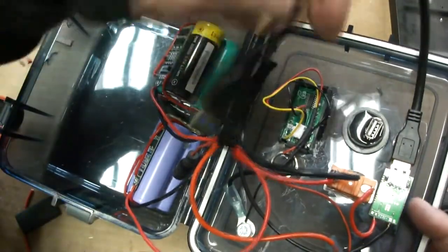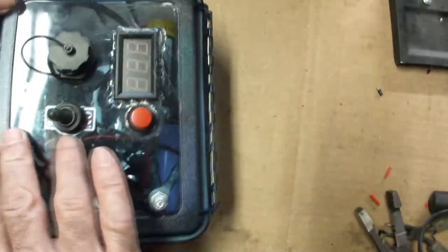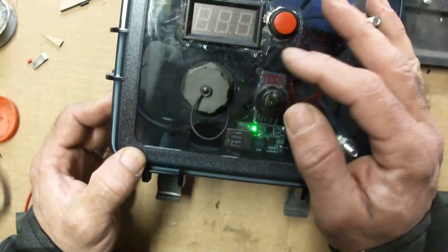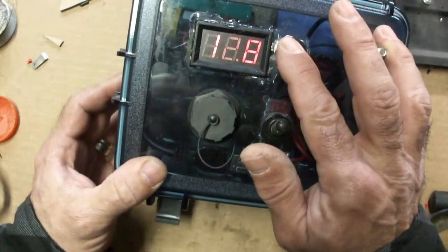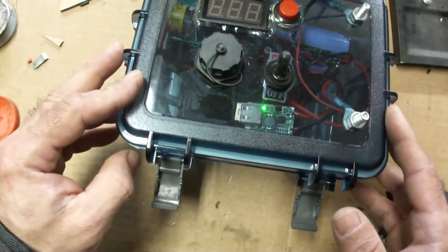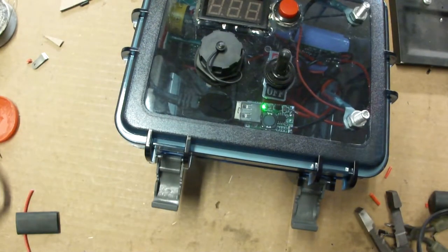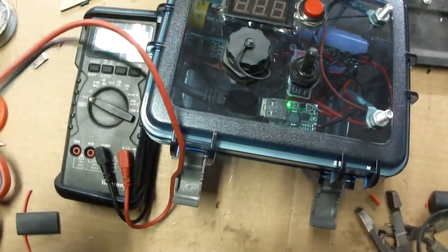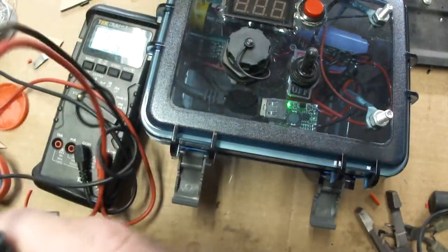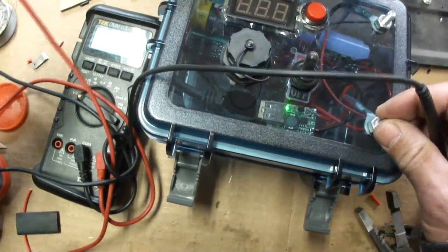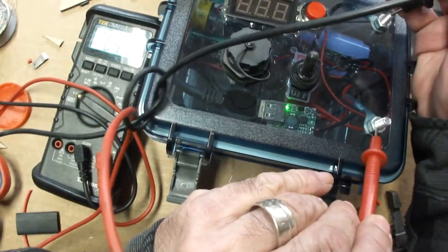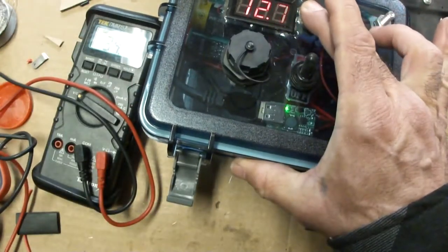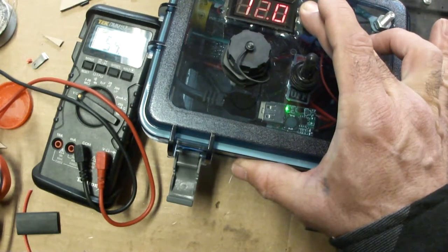So we have 12 volts coming directly off the batteries. Let me check the battery posts. We should have 12 volts on these as well. 12.38 volts. I notice this thing does read a little bit low, but it's a good way to get an idea of where your charge is at.